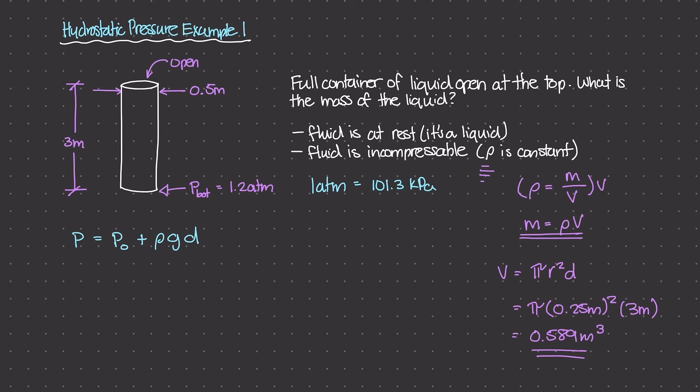Well, P is this P bottom, which is 1.2 atmospheric pressure, and that is equal to P₀. Well, P₀ is this value right here, this 101.3 kilopascal. So I'm just going to write 1 atm plus ρ, is what we're trying to figure out, times g, which is 9.81 meter per second squared, times D. And D is 3 meters, right? Because D is the value from the very top here all the way to the bottom, and that's what we're studying.